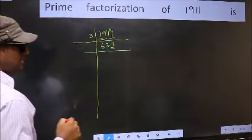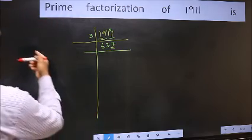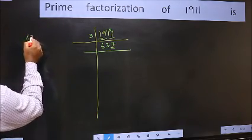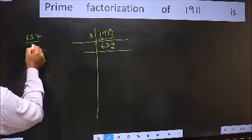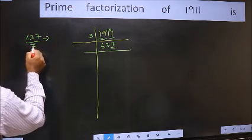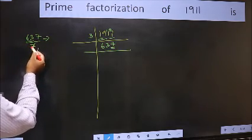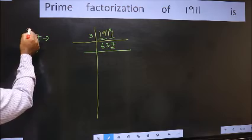Next, prime number 7. Let us check divisibility by 7 here. When do we get 63 in the 7 times table? 7 times 9 is 63.